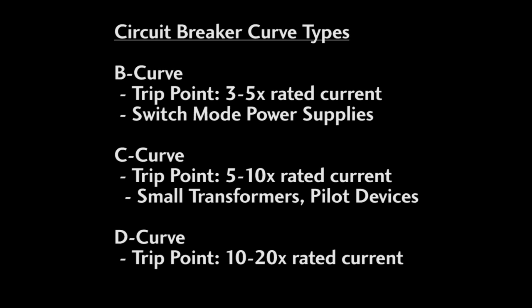The D type curve trips at 10 to 20 times the rated current. These are used for transformers or high inductive loads like motors that need time to get past the high inrush current without the circuit breaker tripping.